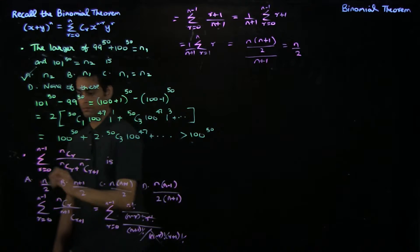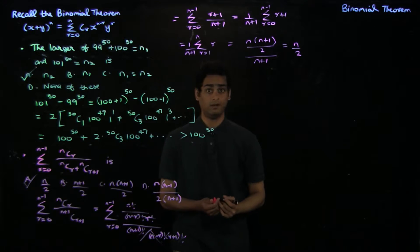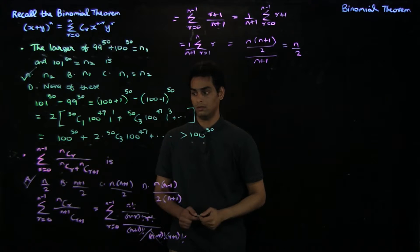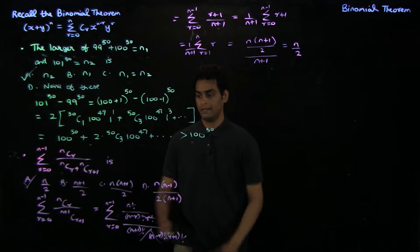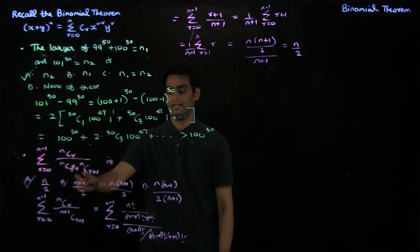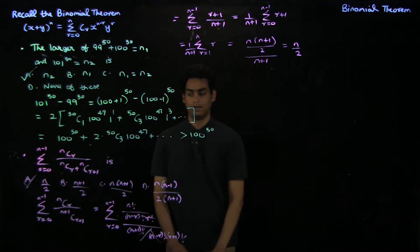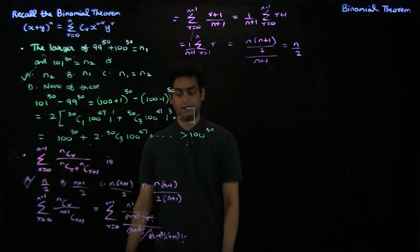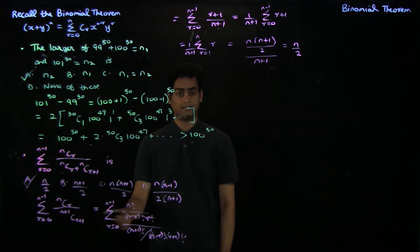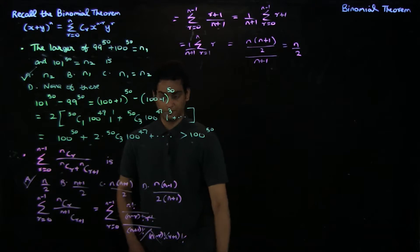This is very easy to evaluate. It's just n times n plus 1 over 2, which is the summation r equal to 1 to n of r, divided by n plus 1. This gives you n by 2, and you see that option a is n by 2. We initially applied the identity nCr plus nCr plus 1 equals n plus 1cr plus 1, and then realized it was easy to just expand the terms to simplify the summation.